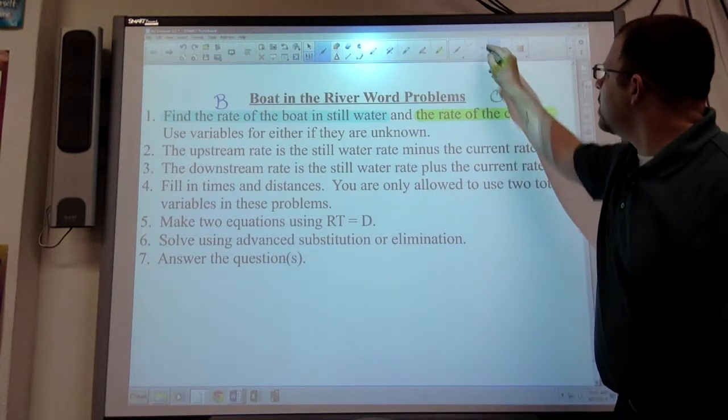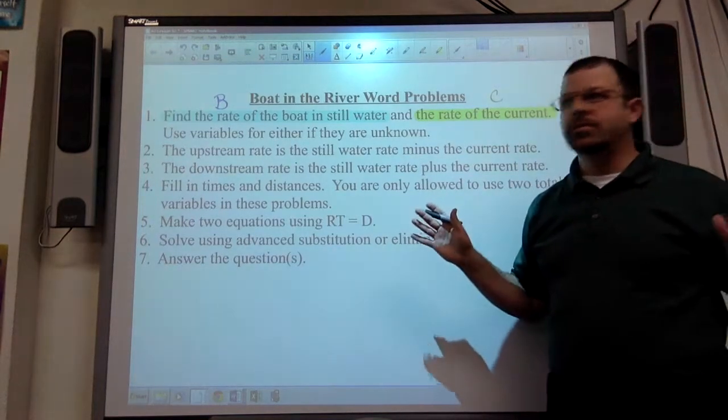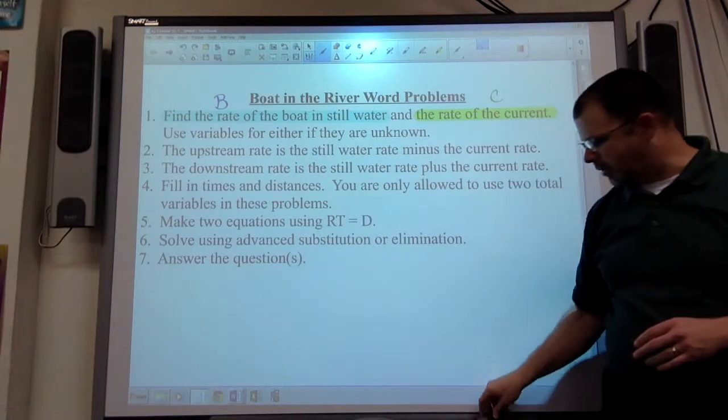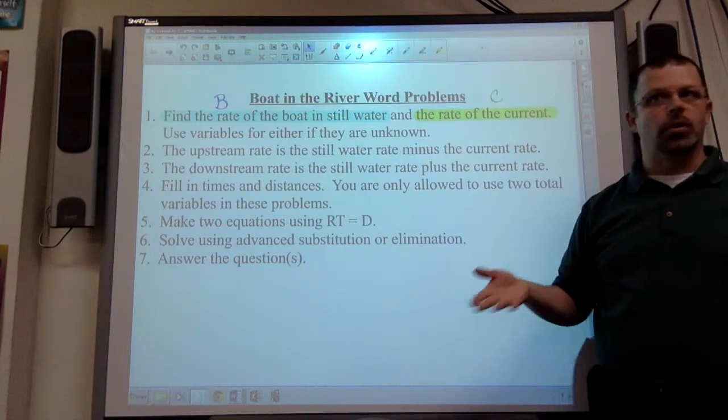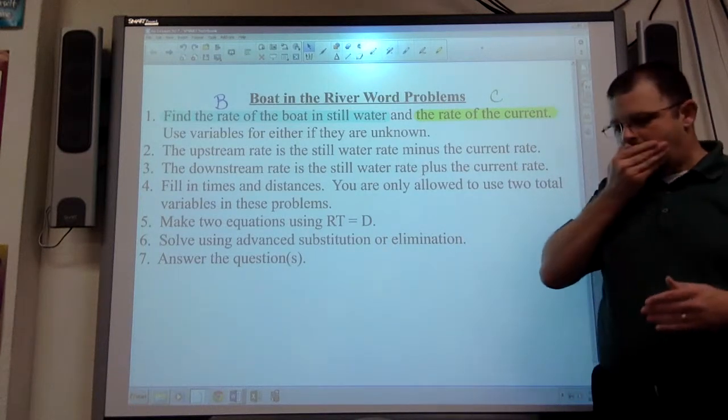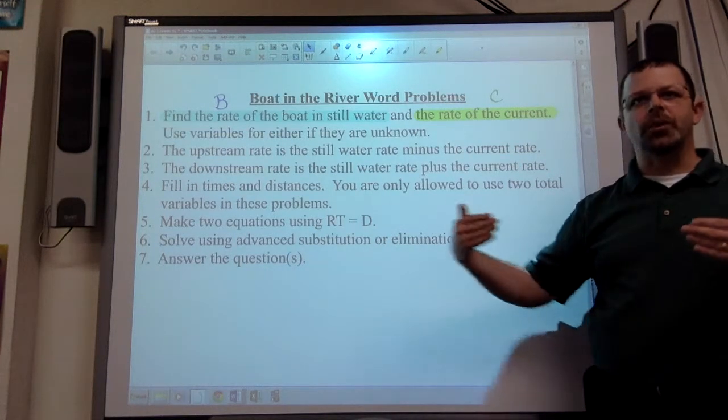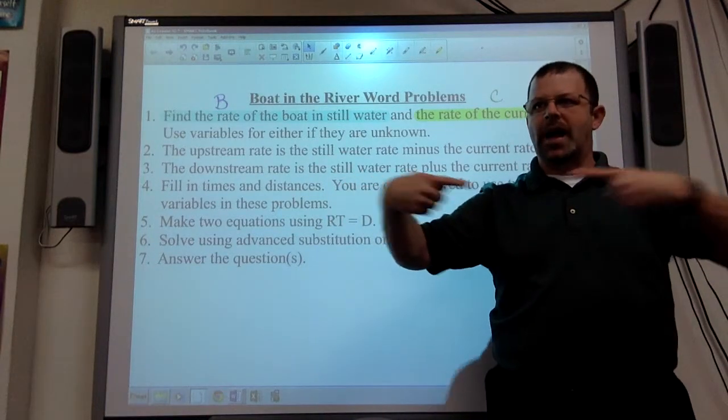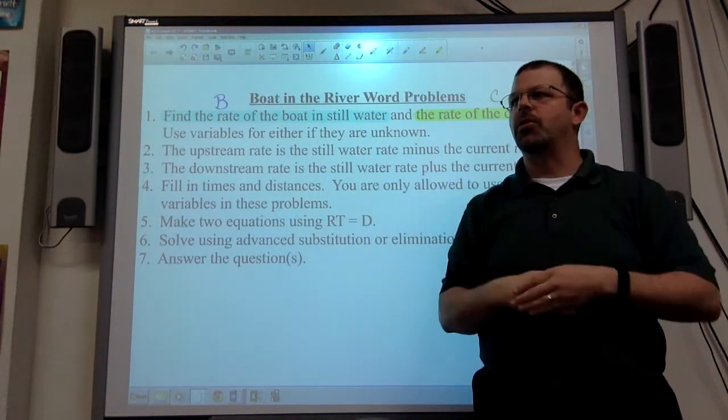Second step. Create your chart, and then you have upstream and downstream. When you're talking about being on a river or in the jet stream, upstream is when you're going against the current. So you want to go this way and the stream is going that way and it's pushing against you, slowing you down.